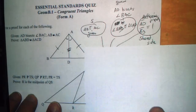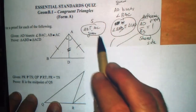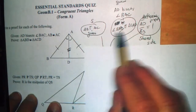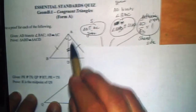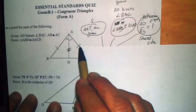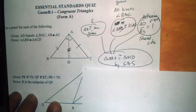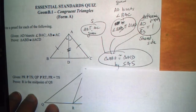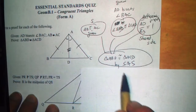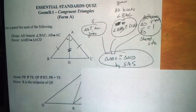The last bit of information is the reflexive property with the shared side, which means AD equals AD. That means we have three bits of information that we can use: SAS, side angle side.